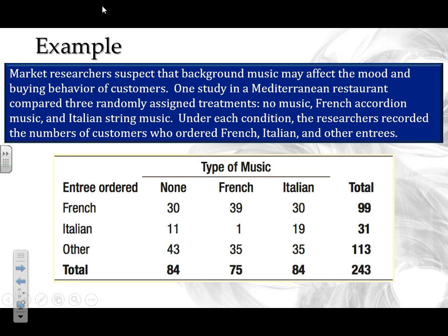When looking at this problem, the first thing to establish is what type of test to run. Are we trying to match a sample distribution to a claimed distribution? No — there's no stated distribution to match, so it's not goodness of fit. So we look at the homogeneity test: are we looking at multiple groups of people? Yes. Are they being measured on one single variable? Yes.